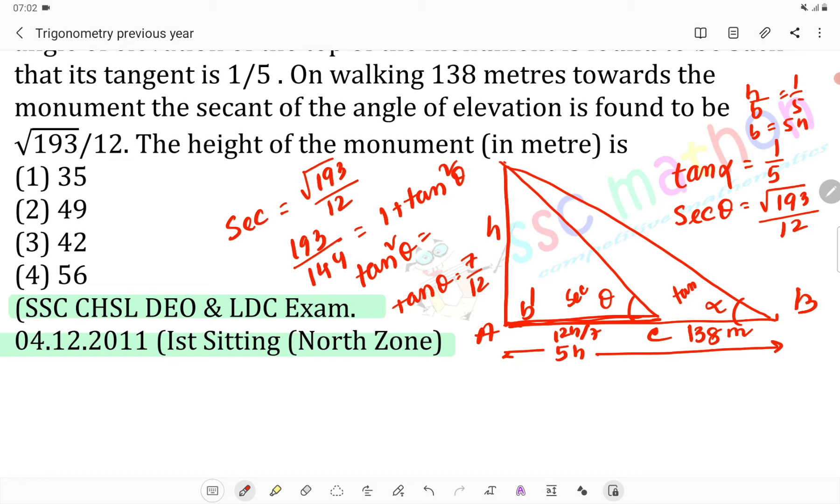The length given is 138. So 5h minus 12h/7 equals 138. Taking LCM: 35h minus 12h equals 23h. So 23h/7 equals 138.